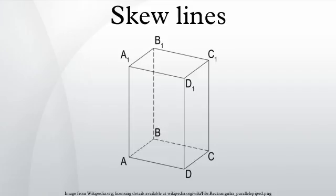A simple example of a pair of skew lines is the pair of lines through opposite edges of a regular tetrahedron.